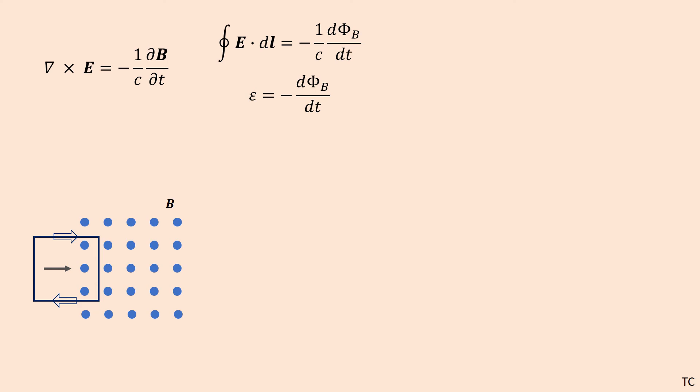So the wire will do whatever it can to try to cancel out the change in magnetic field, or more correctly, the changing magnetic flux through it. So that means when it's in the middle of the field and the magnetic flux through it is not changing, there won't be any induced emf.